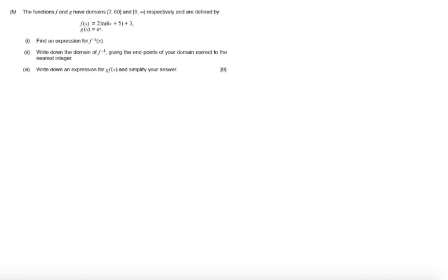So let's look at now part b of our question. Part b says the functions f and g have domains [7,60] and [9,∞) respectively and are defined by f(x) equals 2ln(4x+5)+3 and g(x) equals e^x. Part i asks to find an expression for f^(-1)(x) so we're looking for the inverse function of f(x).